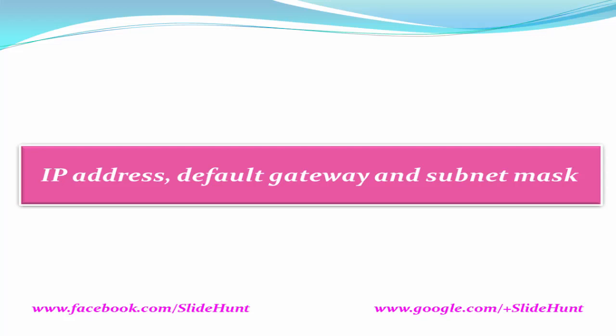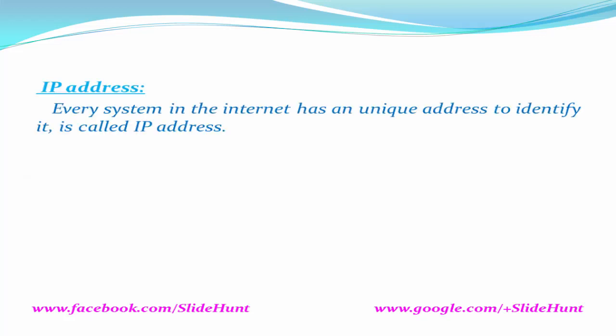First, we have to know what is an IP address. Every system on the internet has a unique address to identify it. It's called IP address. An IP address is in the format of four sets of decimal numbers separated by dots. The decimal number in each set is in the range from 0 to 255. This is an example of an IP address. IP address is of two types: IPv4 address and IPv6 address.